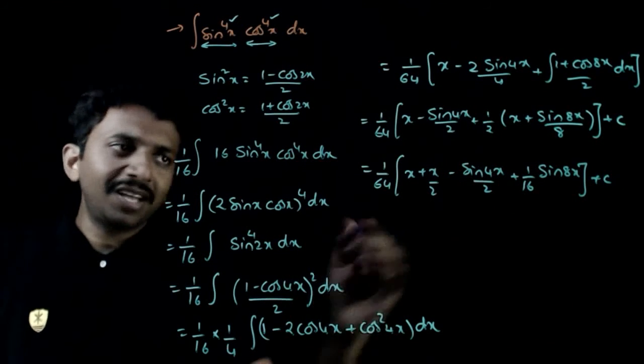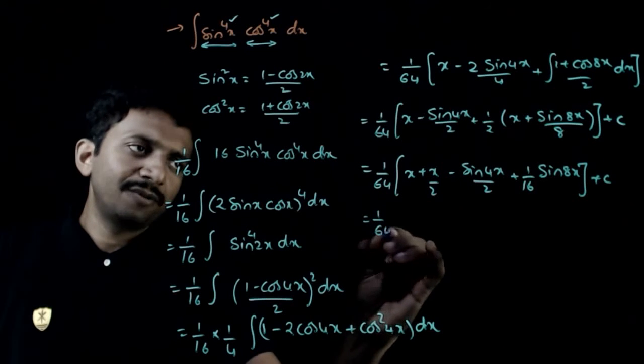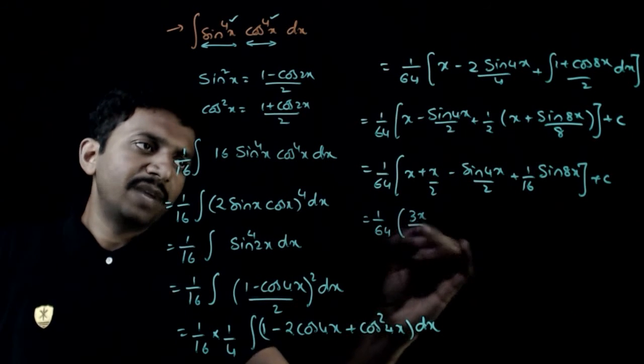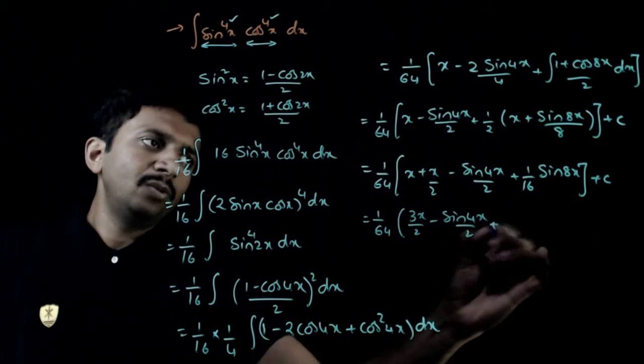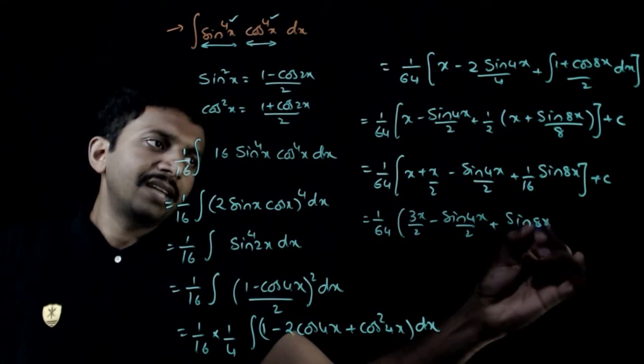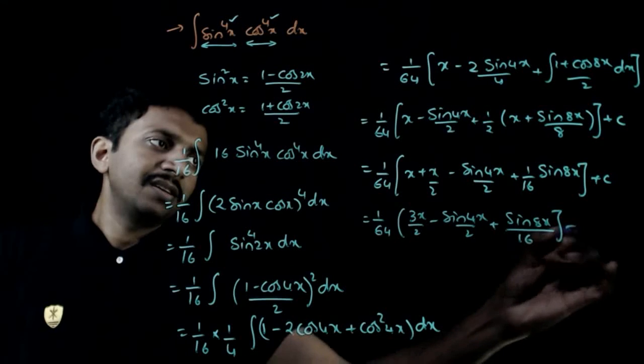So x plus x by 2 becomes 3x by 2. 1 by 64 times 3x by 2 minus sin 4x by 2 plus sin 8x by 16 plus c.